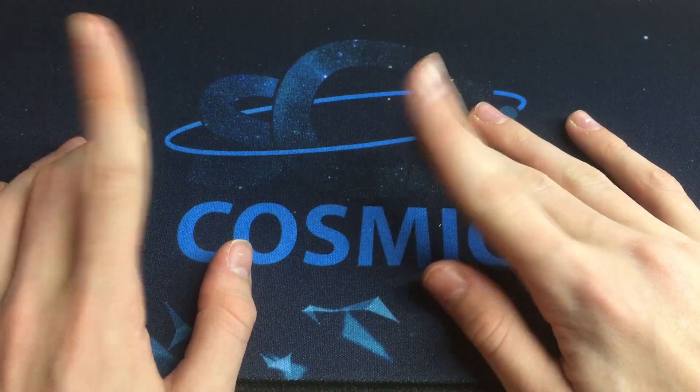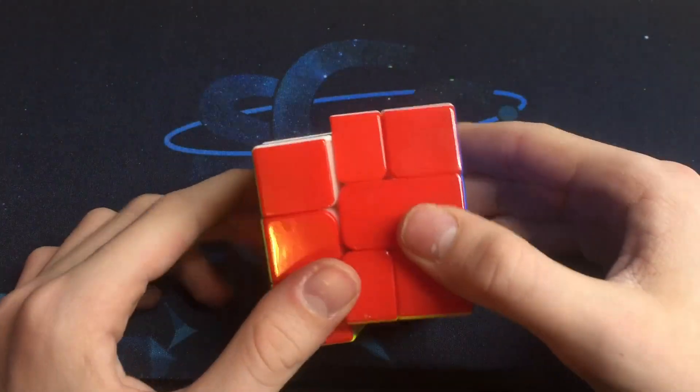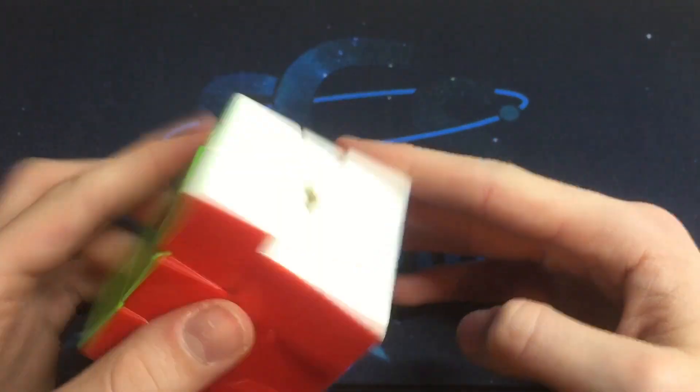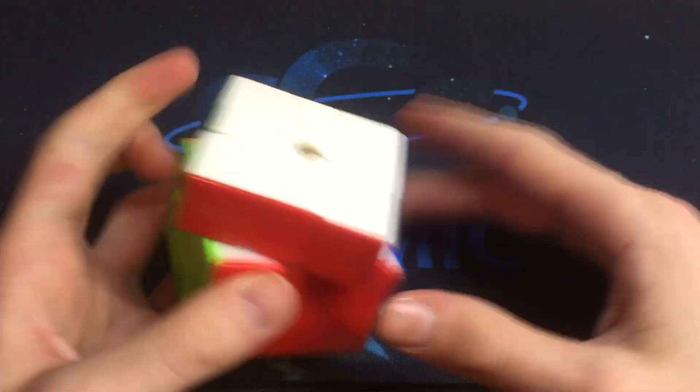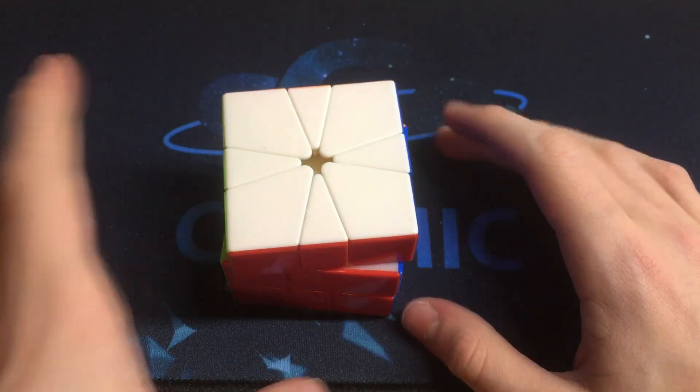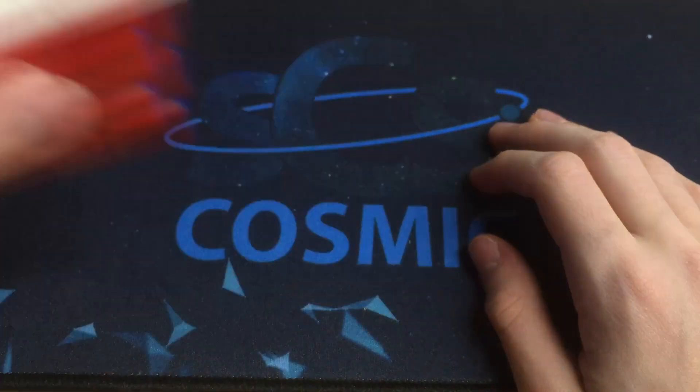Okay, so next is Square-1. I practice this event the most and I think it's my most enjoyable event. I have 2 Square-1s. This is a normal QiYi Square-1. I don't use this at all. I think it has a stripped core now. It does. And it just doesn't feel right. It's very slow and doesn't like the feeling.